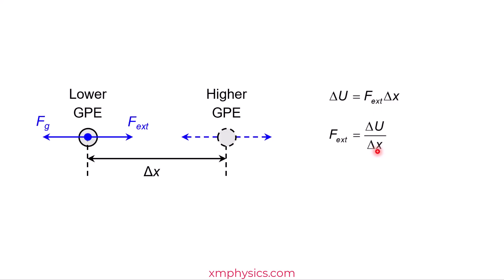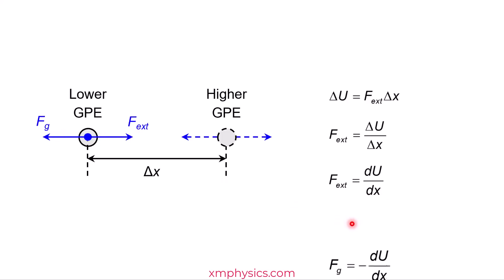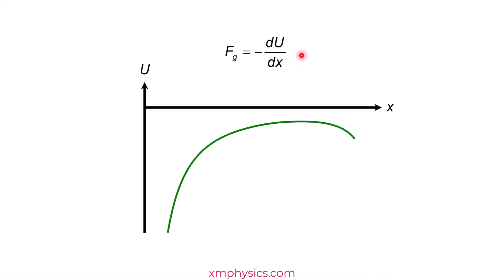Rearranging the equation — since delta x is a tiny distance, we can write the external force as equal to dU/dx. But the external force is equal but opposite to the gravitational force, so the gravitational force must be equal to negative dU/dx.